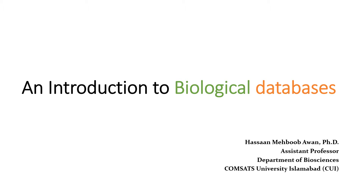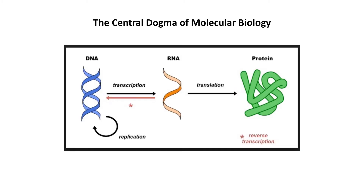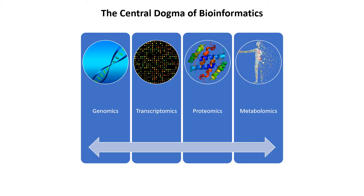Today we will discuss biological databases, but before that I want you to refresh your memories on the central dogma of molecular biology. According to the central dogma, the flow of information is from DNA to RNA and from RNA to proteins. In some viruses, RNA is first reverse transcribed into DNA. We can also describe a central dogma of bioinformatics where we talk about genomes, transcriptomes, and proteomes at a larger scale.